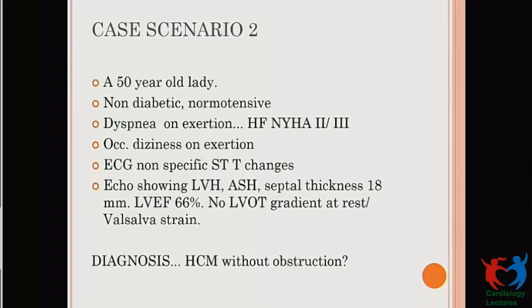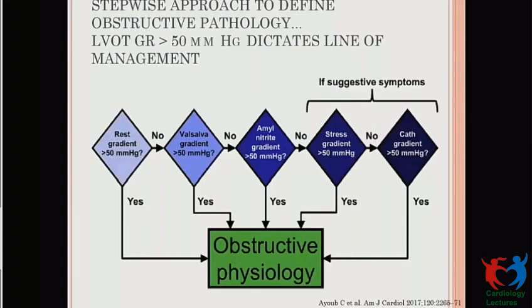Case: a 50-year-old, non-diabetic, non-hypertensive patient with heart failure NYHA class 3, occasional dizziness on exertion, presenting with asymmetric septal hypertrophy with thickness of 18 mm, preserved ejection fraction, no LVOT gradient at rest, and negative Valsalva. Should we label this as HCM without obstruction? No — a stepwise approach should be followed, especially in symptomatic patients. Even after Valsalva, if no gradient is found, amyl nitrate inhalation, exercise stress, or dobutamine stress can be used. The last option is cath study. An LVOT gradient of more than 50 mmHg dictates the line of management and septal reduction therapies.